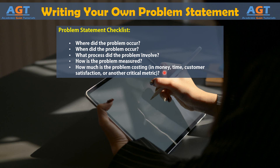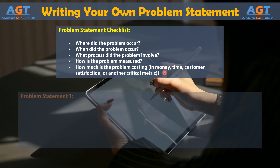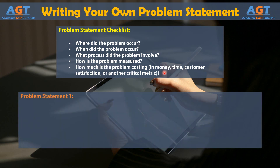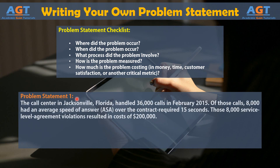Now let's look at two problem statements. Problem statement 1: The call center in Jacksonville, Florida, handled 36,000 calls in February 2015. Of those calls, 8,000 had an average speed of answer